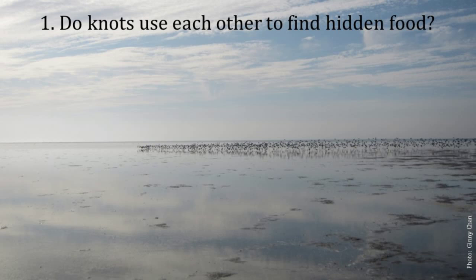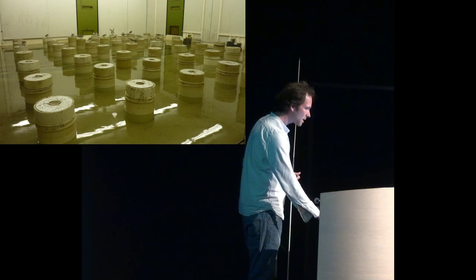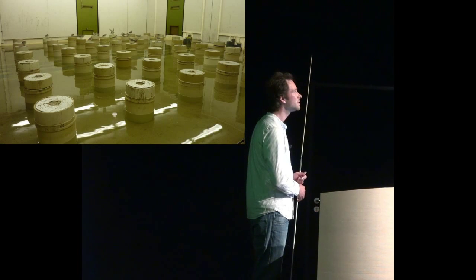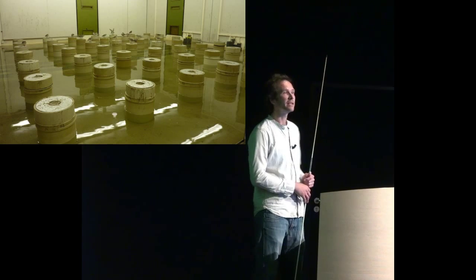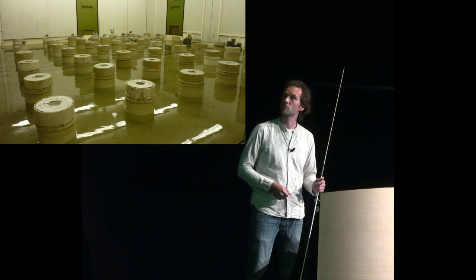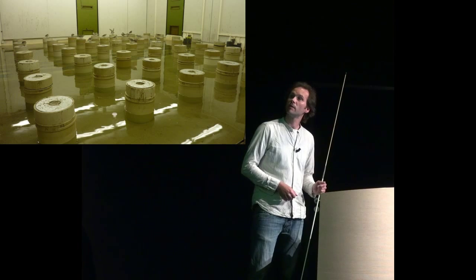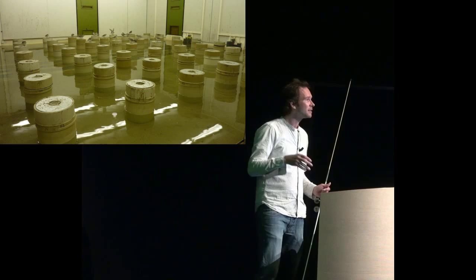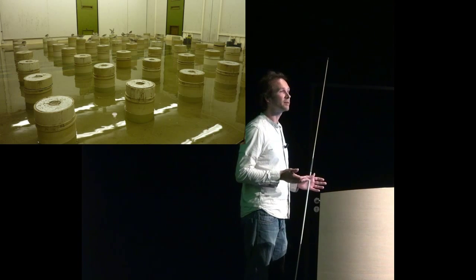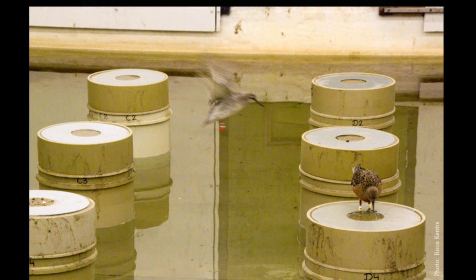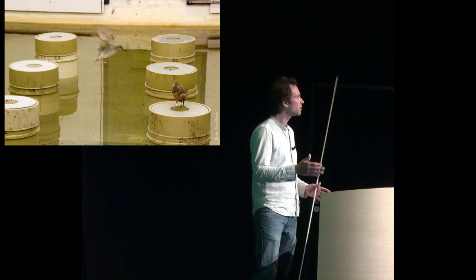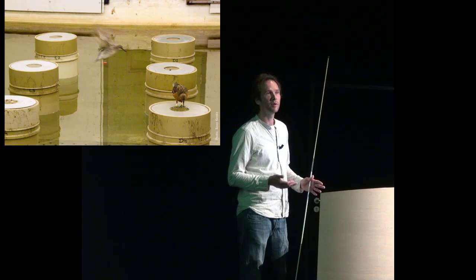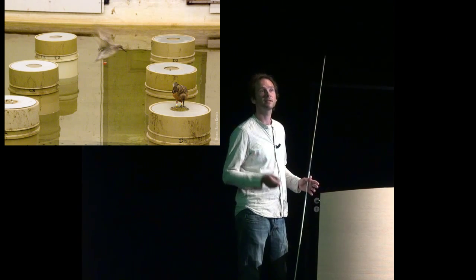Then we come to the first question: do knots use each other to find hidden food? To study this question, we captured a group of knots in the wild and brought them back to the aviaries here at NIOZ. We have the experimental shorebird facility where we designed this experiment with different patches containing sand, and in one of these patches we buried prey items. Then, in varying group compositions and group sizes from one to four, we measured how long it would take the birds to find the prey items — or to find the patch that contained prey.